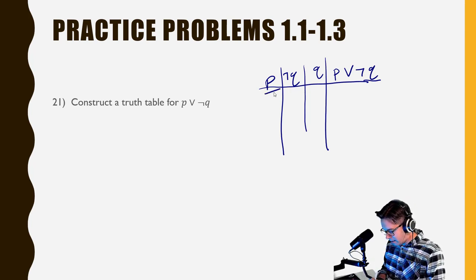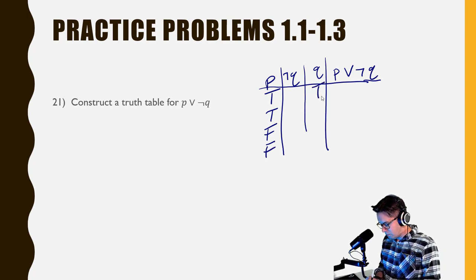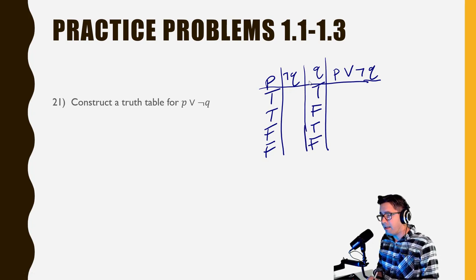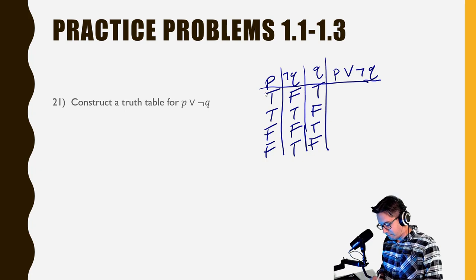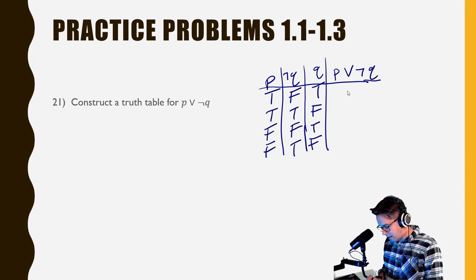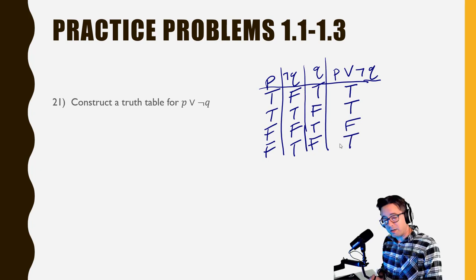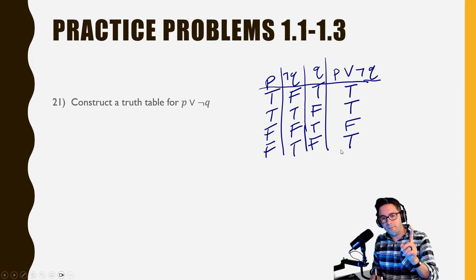So we have: true, true, false, false for P, and true, false, true, false for Q. Got to make sure they all line up. Then I negate Q, so not Q is: false, true, false, true. Then for P or not Q, it's or, so one of these has to be true. True and false means true. True and true means true. False and false means false. And false and true means true. Remember, for or, at least one of the things has to be true.